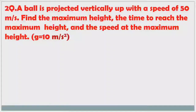Problem 2: A ball is projected vertically up with a speed of 50 m/s. Find the maximum height, the time to reach maximum height, and the speed at maximum height. G value is given as 10 m/s². The time to reach maximum height is nothing but time of ascent.